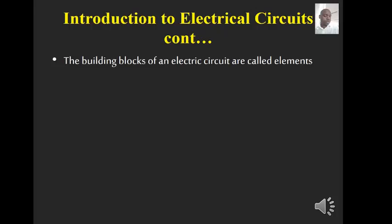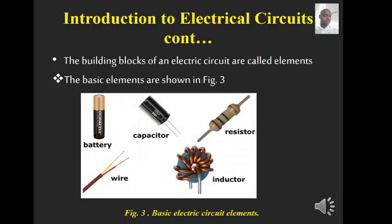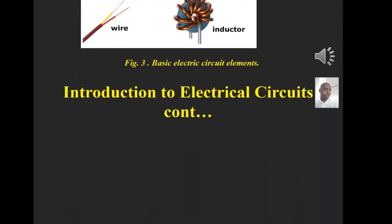The basic thing is the battery, which acts as the source. Then look at the capacitor, which is an energy storing element. Then look at resistors, which offer opposition to the flow of current in the circuit. Then talk about inductors, which resist the change in current, and in a DC circuit they end up acting just like connecting wires.